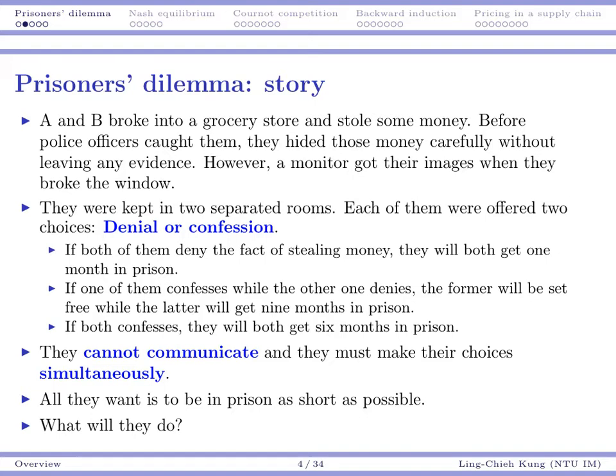When the two guys are making their decisions, they cannot communicate with each other, so they must make their decisions at the same time. It's not possible for one to make the decision and tell the other guy and then ask the other guy to make the decision — they must make decisions together, at the same time. What they want, of course, is to be put in jail as short as possible. Now we have the full story. We want to know what will they do — we will formulate a game and solve it.